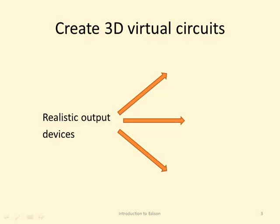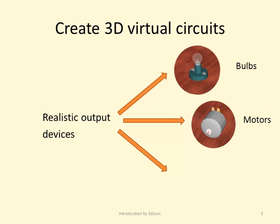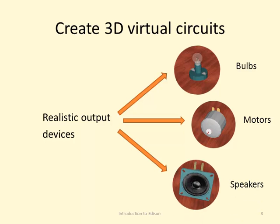Your virtual circuits can control realistic output devices, bulbs that have various levels of brightness, motors that can spin at variable speeds, and speakers that produce a wide variety of sounds.